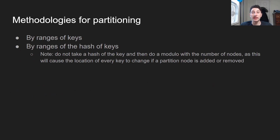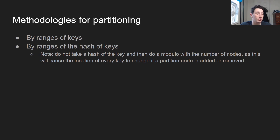There are two methodologies we'll talk about for partitioning your data. The first one is by ranges of keys, and the second one is by ranges of the hash of keys. Keep in mind that I said the range of the hash of the keys here — you don't just take the hash of the key and then modulo the number of servers you have serving partitions, because that would mean that if you added another server, everything on the original servers would have to get re-placed to different nodes in the cluster, and that would be very bad.